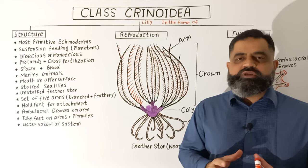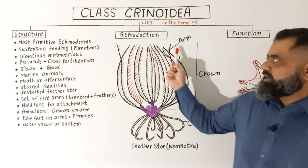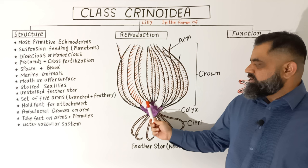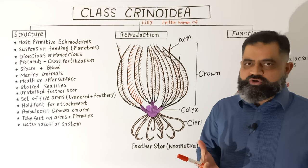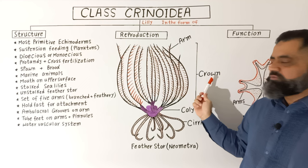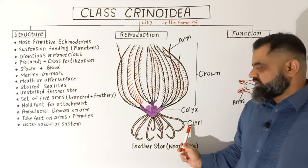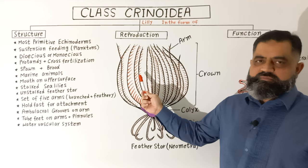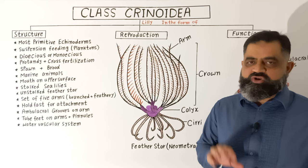We will discuss the morphology, anatomy, and functions of these animals in detail. This animal belonging to Class Crinoidia is known as a feather star or Neometra. It has a main body region known as the theca, which includes all the major organs. From the theca arise two kinds of filaments: arms on the oral or upper surface, which make up the crown, and cirri on the aboral side, used for attachment and locomotion. These arms contain microfilaments known as pinnules, which give them a feather-like appearance.